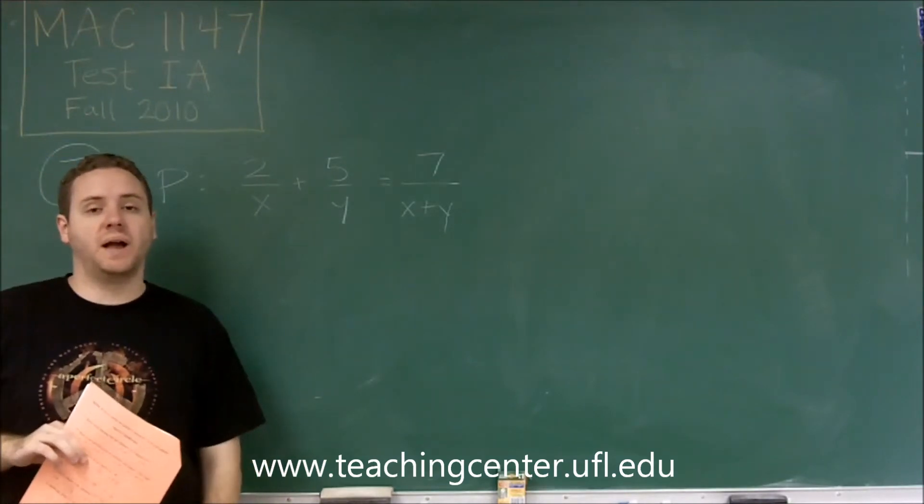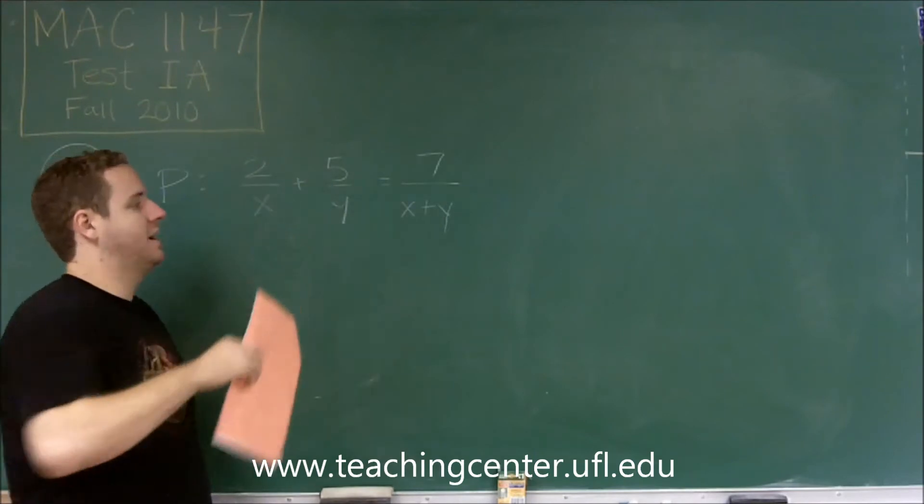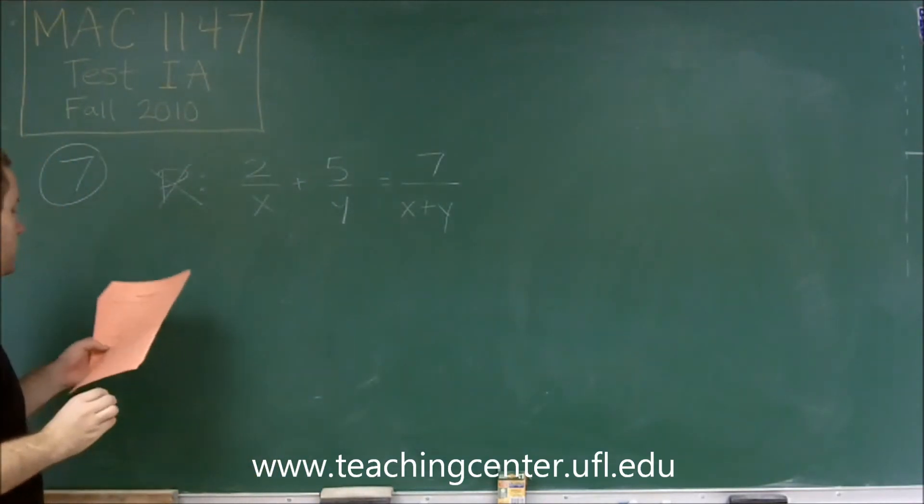If you have different denominators, you have to get a common denominator before adding them. So a common denominator here would have to be multiplying by x and y, and you definitely don't get this. So P is not correct.